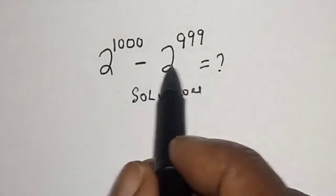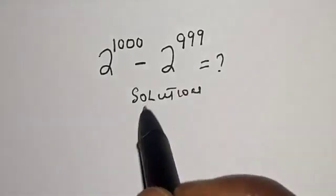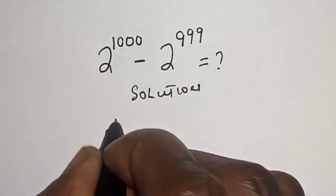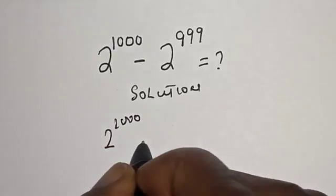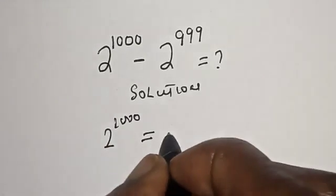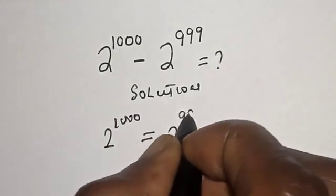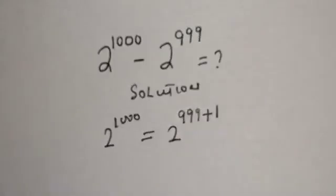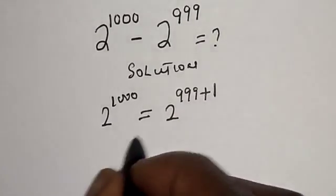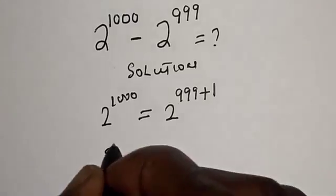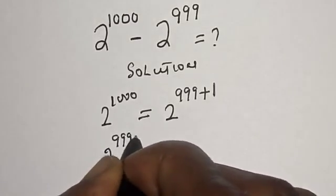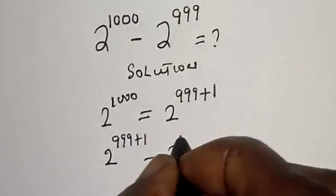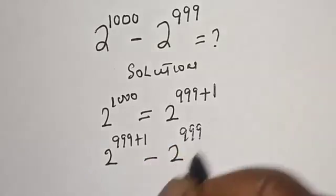The solution: we have 2 raised to power 1000 and 2 raised to power 999. How do we solve this? 2 raised to power 1000 is equal to 2 raised to power 999 plus 1. Then we have 2 raised to power 999 plus 1 minus 2 raised to power 999.